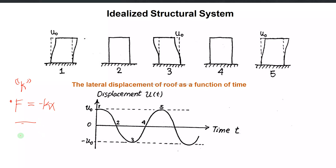So let's say this spring has a restoring force. When a mass is attached to the spring, the mass will compress or stretch the spring. The spring has a proportionality constant k — we call this the stiffness, specifically the stiffness of the spring.